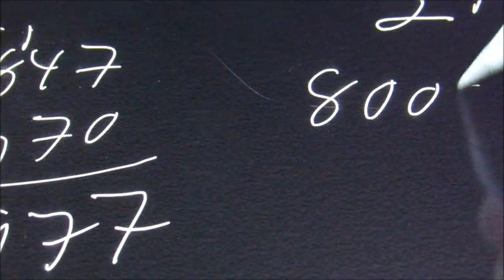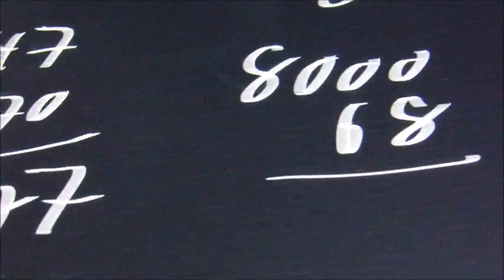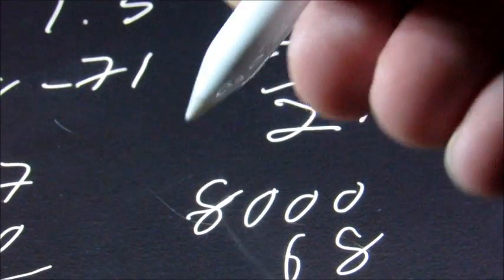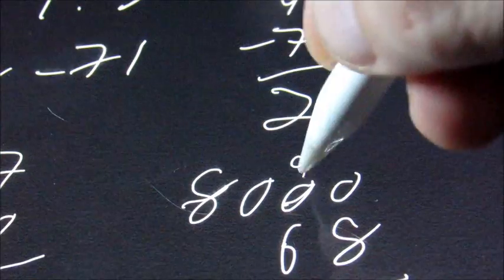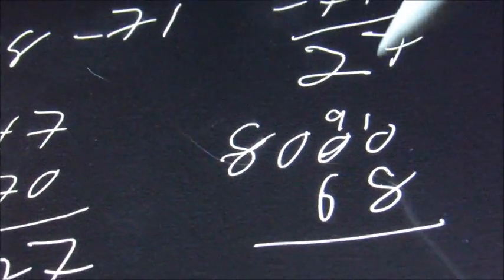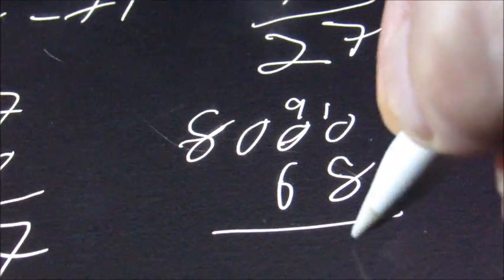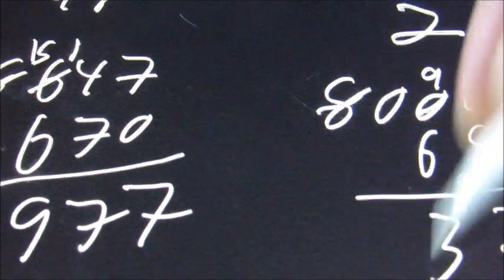If we have 8,000 minus 68, we're going to have to borrow. And here, this is going to become a... We borrow 1 from here. So this becomes a 9 and a 10. And we have 10 minus 8 is 2, 9 minus 6 is 3.